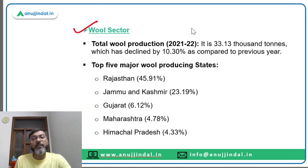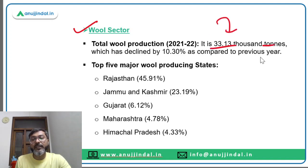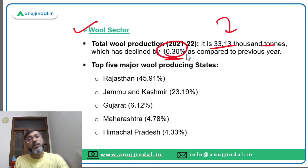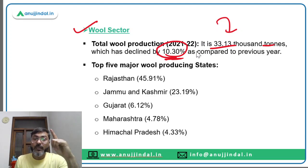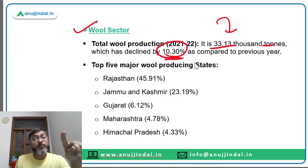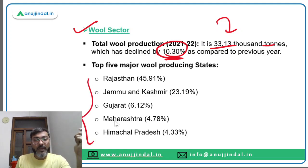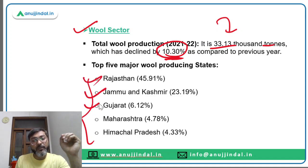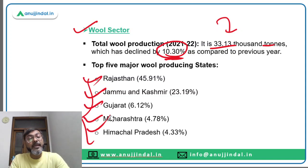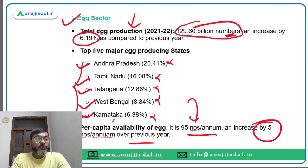Talking about the wool sector: total wool production in financial year 2021-22 was 33.13 thousand tons, which has shown a decline of 10.30 percent. This is the only sector among the four that has shown a decline in production. The top five wool producing states are Rajasthan, Jammu and Kashmir, Gujarat, Maharashtra and Himachal Pradesh.